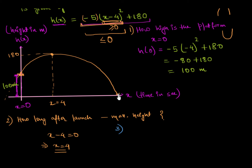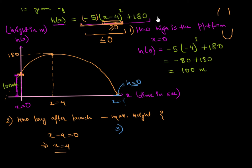The third question asks: what is the value of x when the ball falls back to ground level? The ball follows its complete path and hits the ground again. At that point on the graph, the height will be 0, so we set h of x equal to 0 and solve for x.